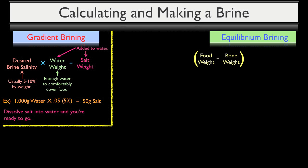Next, take the food weight minus any bone weight and add to it the amount of water that you're going to use for your brine. Now, it's highly recommended that you use equal amounts of water to meat by weight because, as you'll see in a few moments, it makes calculating an equilibrium brine much easier.